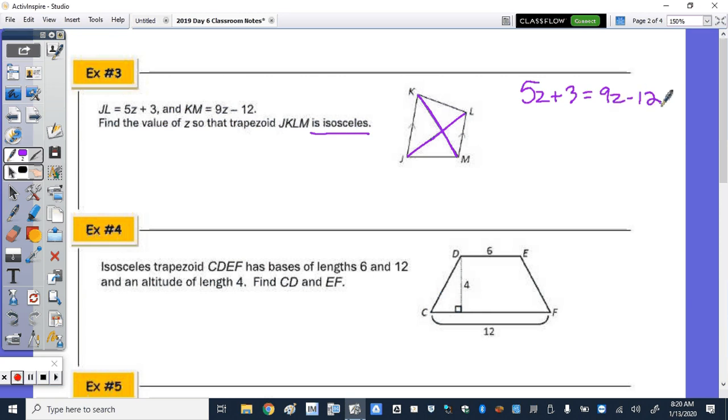Add the 12 over, we get 15. Subtract the 5, we get 4. 15 divided by 4 is 3.75. So Z is equal to 3.75.